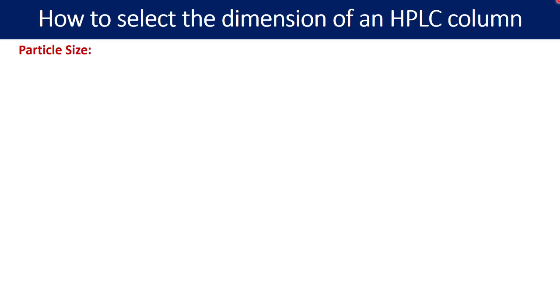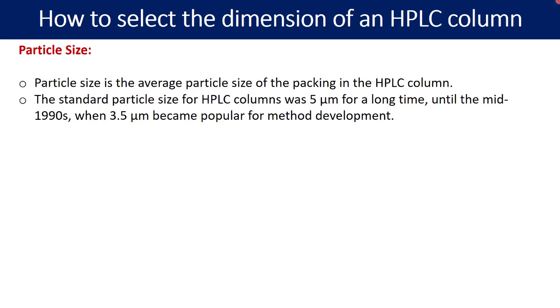The second parameter is the particle size. The particle size is the average particle size of the packing in the HPLC column. You must have seen that the columns with various particle size ranging from 10 micron to 1.8 micron. The standard particle size for HPLC column was 5 micron for a long time until the mid-1990s when 3.5 micron became popular for method development.